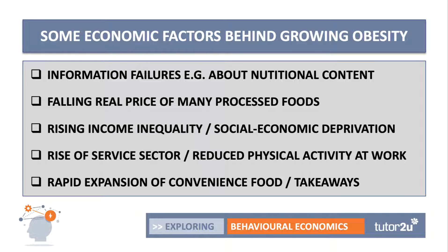The real price of many processed foods has come down in the last decade or two as we move to economies of scale in food production, mass production, volume production, and increasingly a lot of competition between supermarkets to sell cheap processed food. The cost of processed food, which is often quite high in salt, sugar, and fat, has come down not just relative to inflation generally, but relative to people's incomes. It's important to think about the impact of persistently high levels of income inequality and growing socioeconomic deprivation as a cause of obesity, particularly for families most at risk who literally, in many cases, cannot afford to eat healthily because of very limited budgets.